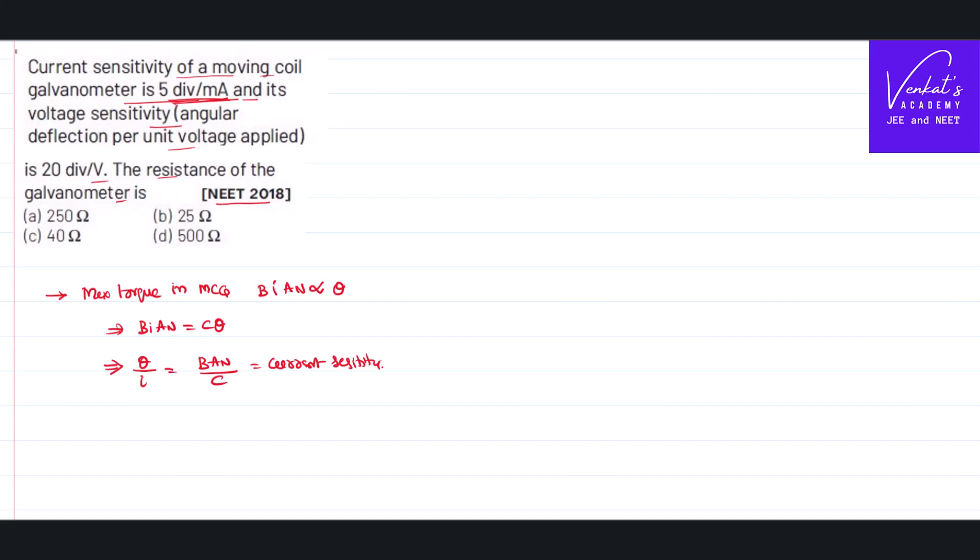Now next, let's try to measure the voltage. When you try to measure the voltage, we can convert it in terms of a voltmeter. V equals I*R, so I can be written as V by R. Put this I here: theta by I means voltage by resistance of that moving coil. Voltage sensitivity is also given in the problem.